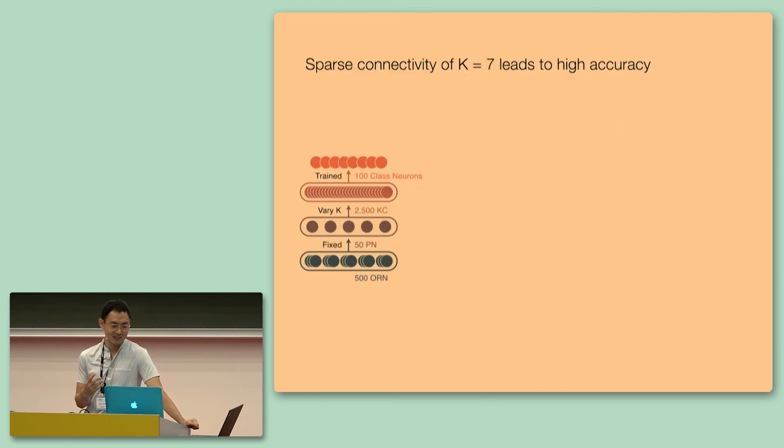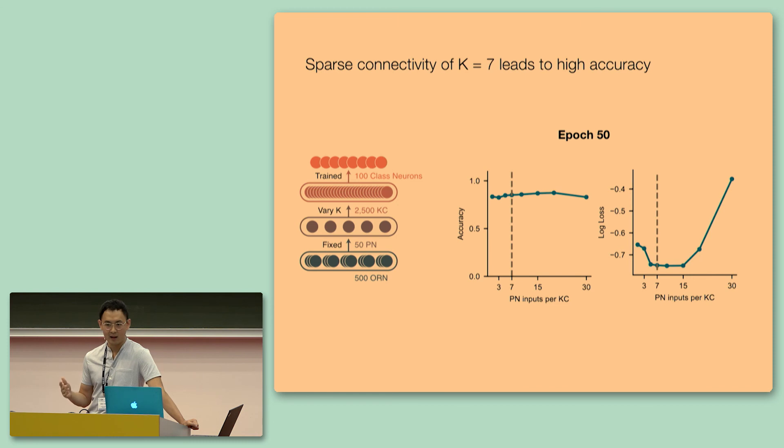And the simplest solution, the simplest hypothesis that we first tested, is that sparse connectivity of 7 simply leads to higher accuracy. And in order to test this, we first fixed the connectivity between the OR and the PN layer to be the glomerular solution. And we simply varied K in our networks, the input degree of Kenyon cells. And we find that, to our surprise, a variety of networks with variable K actually performs all the same. There's really no difference in either accuracy or loss for a variety of K values from 3 to 15. And we were quite puzzled by this result. So we decided to look at it more carefully.